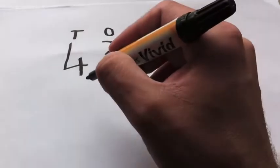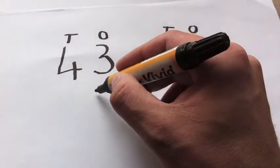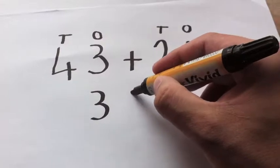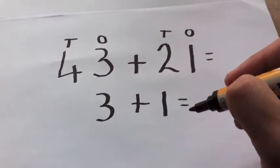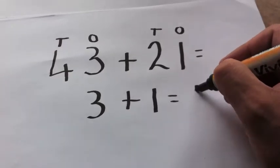So what you're going to do is your ones column, 3 plus 1, pretty straightforward, obviously 4.